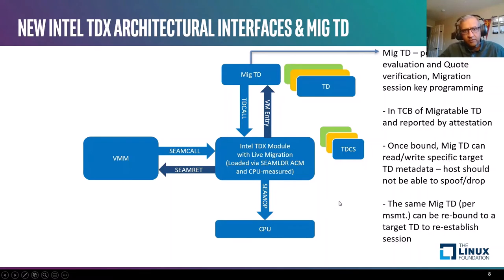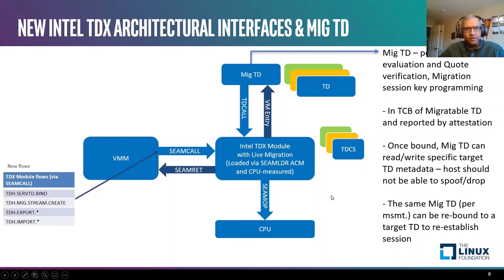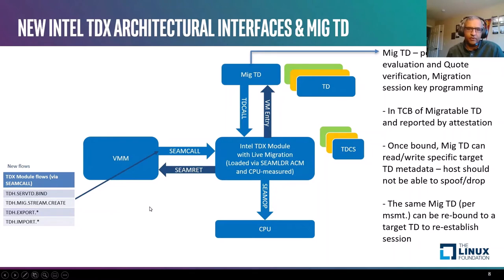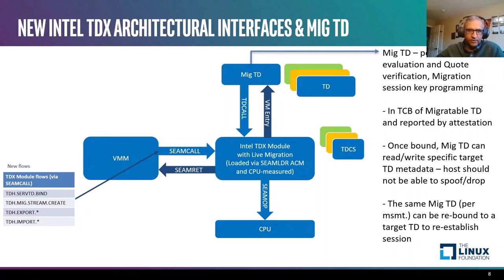To support the migration TD's interactions with the target TD, the VMM can invoke a new set of interfaces provided by the Intel TDX module as part of live migration to bind the migration TD to the target TD. The bind operation essentially records the measurement of the migration TD into the TD infrastructure maintained by the TDX module for the target TD. So on an eventual quote generated for the tenant TD that is migratable, the fact that this particular migration TD is bound to that target TD is evident in the quote generated by the platform. Let me quickly introduce these instructions or interface methods.